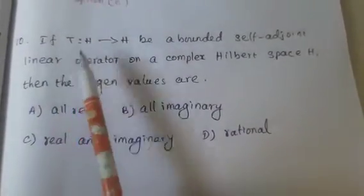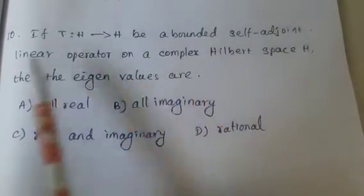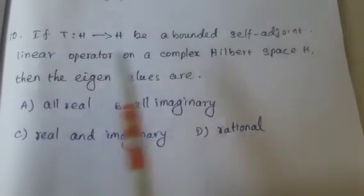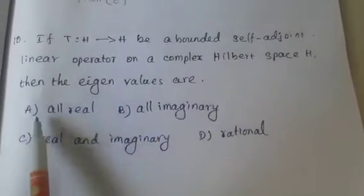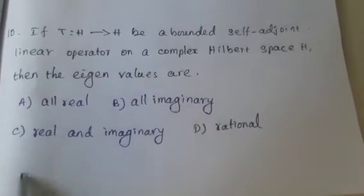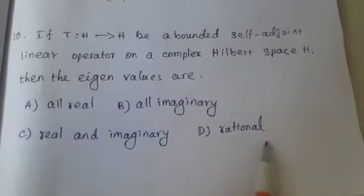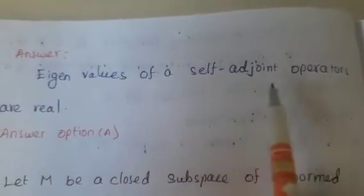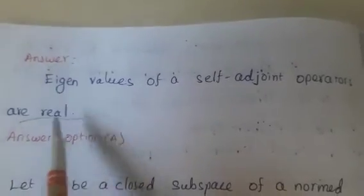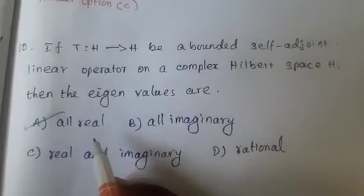If T from H tends to H be a bounded self-adjoint linear operator on a complex Hilbert space H, then the eigenvalues are — Absent A, all real; Absent B, all imaginary; Absent C, real and imaginary; Absent D, rational. Eigenvalues of a self-adjoint operator are real. Absent A, real, is the correct answer.